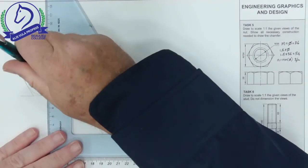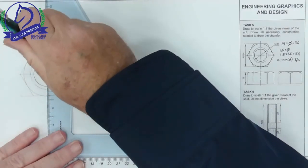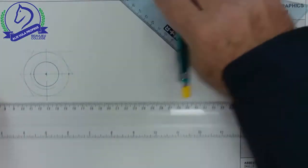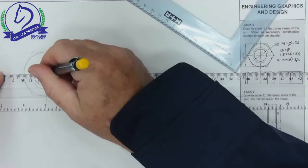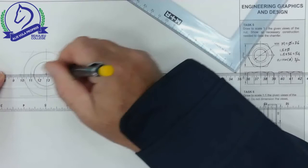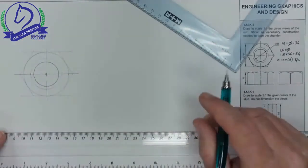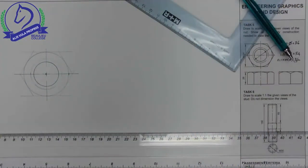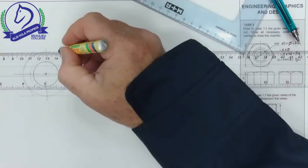I'm just going to put in the center line and just darken in this outside edge quick.